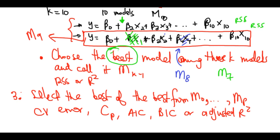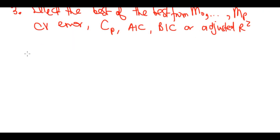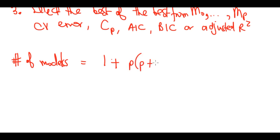So this is backward because we start with the full model and remove useless variables at each stage. Just like forward stepwise selection, the number of models you go through is equal to 1 + p(p+1)/2. This means it can also be applied in settings where p is too large to apply the best subset method, since best subset creates all possible models at each step.